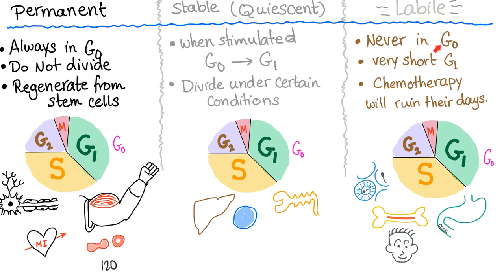On the other end of the spectrum you have labile cells — they are never in G0, always in the cell cycle, always dividing like crazy, with very short G1. Examples: spermatogonia dishing out millions of sperms per day; bone marrow dishing out millions of red blood cells, thousands of white blood cells, and thousands of platelets every day; hair cells dividing like crazy; and GI cells dividing like crazy.